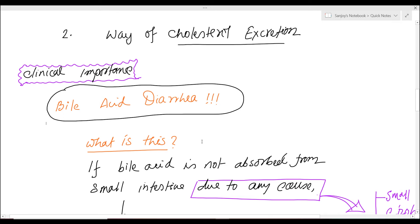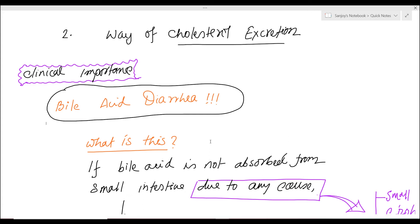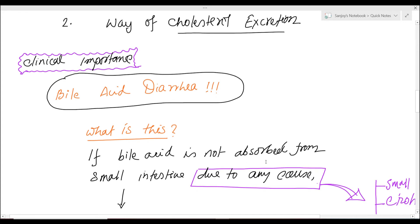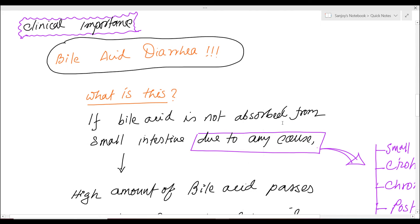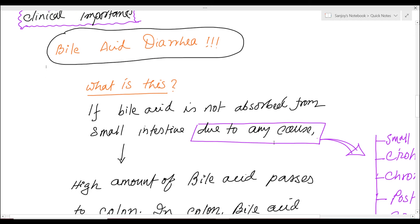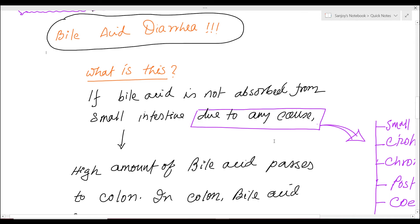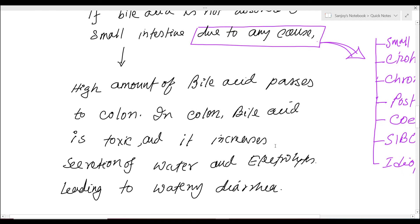More than 95% of bile acid or bile salt is absorbed from the terminal ileum. Bile salt or bile acid is toxic in the large gut — that is, the colon. If more than the normal amount of bile acid or bile salt passes to the colon, the toxicity increases the secretion of fluid and electrolytes into the colon.